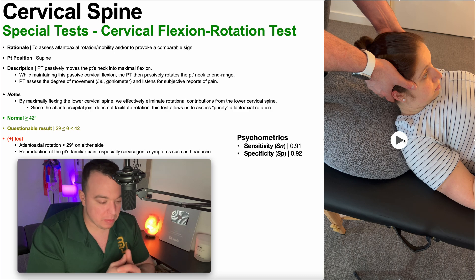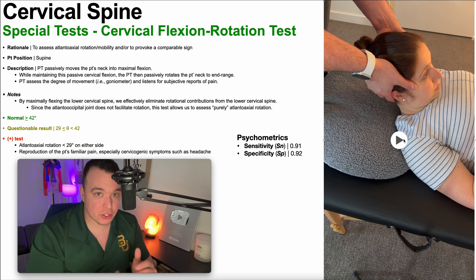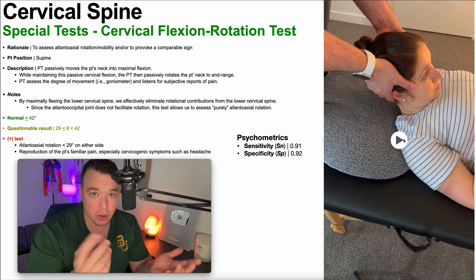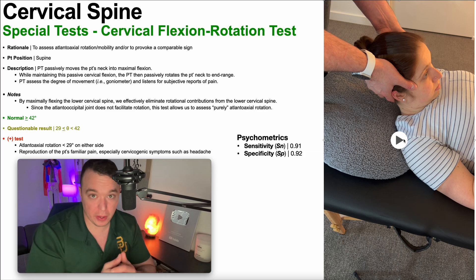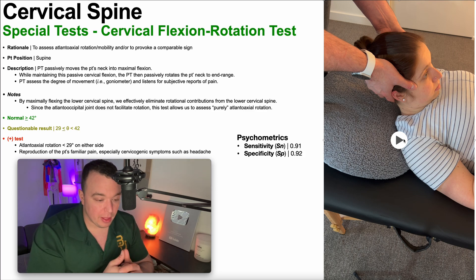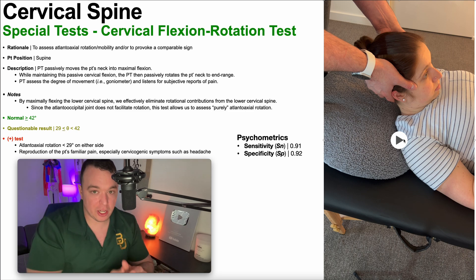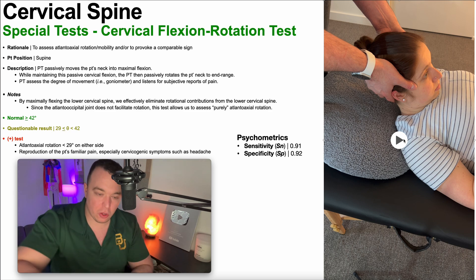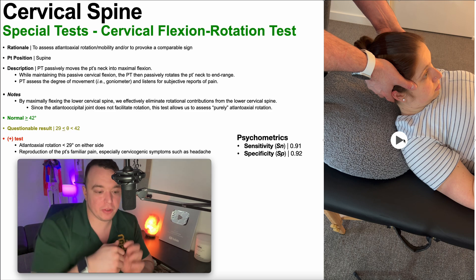Now why is that important? Well, there's a law called Freyette's Third Law. He has three laws — the first two don't really pertain to this at all, but the third one's very important. Let's suppose you have a joint — and really we're talking about the lower cervical spine here — that allows movement in three planes: the sagittal plane, the frontal plane, and also the transverse plane.